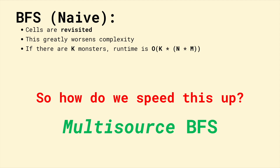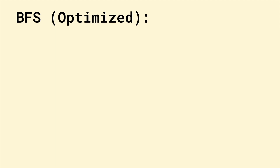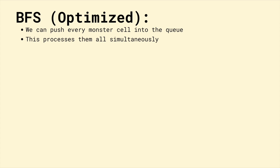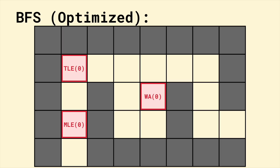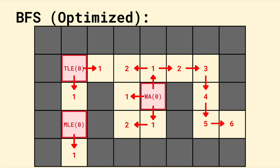To do this, we can use multi-source BFS. We start by pushing every single monster into the queue. This means that they're all processed at the same time, so no cells are revisited. Since every monster is in the queue at once, a cell's first visit is guaranteed to be its shortest. Let's look at how our monsters move with this change: they first mark all their own cells with zero, then spread out nearby, and continue to spread, making sure every cell is marked only once.